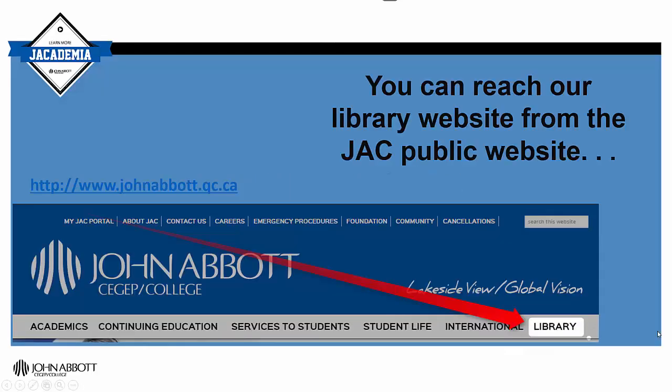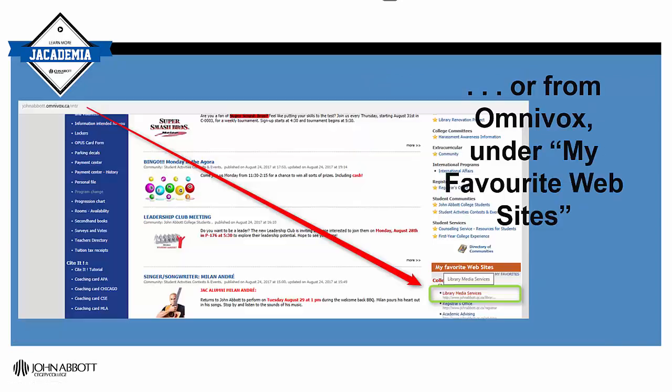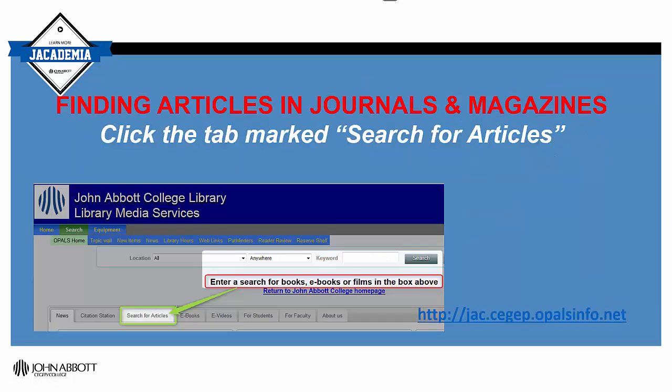To find articles on our website, go to our library website from the John Abbott homepage or from Omnivox. Don't search for books in the keyword search box — click on 'Search for Articles' on the tab below.